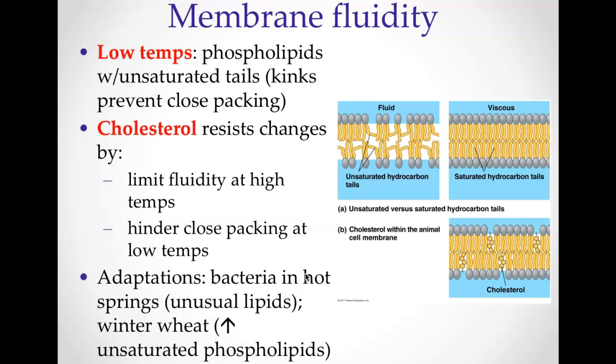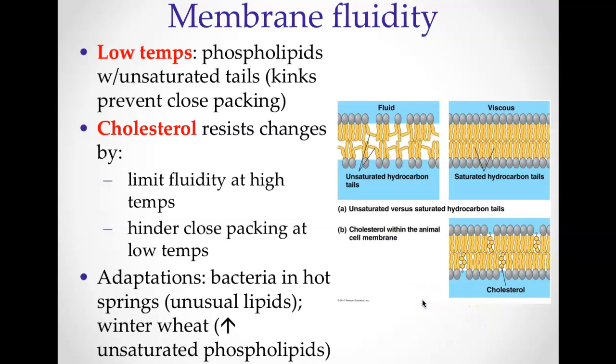Here are a couple of examples. Bacteria that live in a hot spring — what are they going to have a lot of in their membrane? They're going to have a lot of cholesterol. Winter wheat that could possibly freeze — what's it going to have in its membrane? It's going to have a lot of double bonds causing kinks, and it's also going to have a lot of cholesterol. So cholesterol is very important to maintaining the cell membrane.